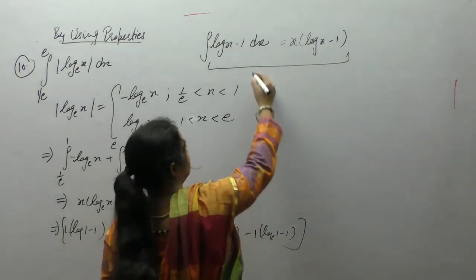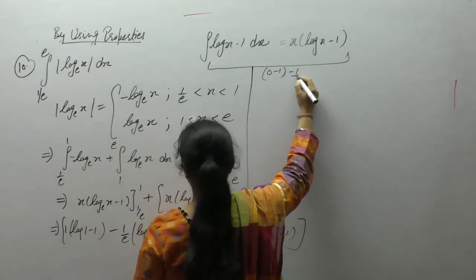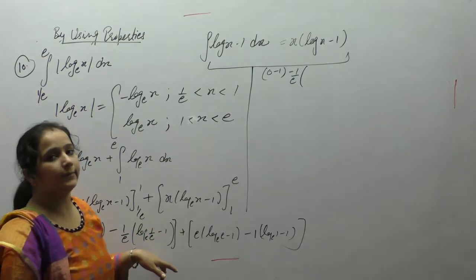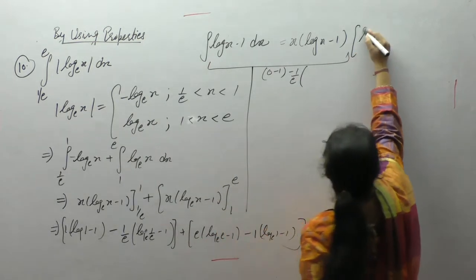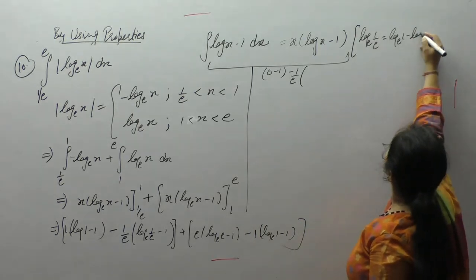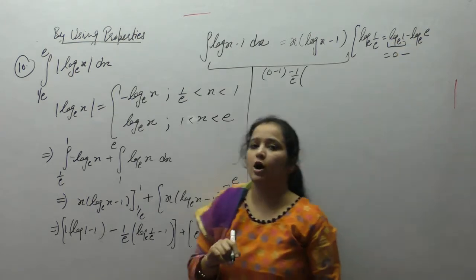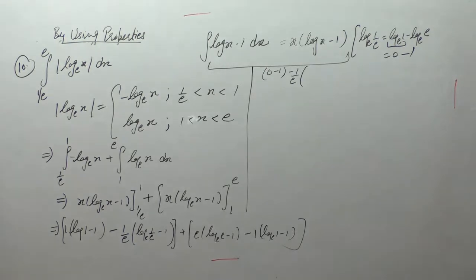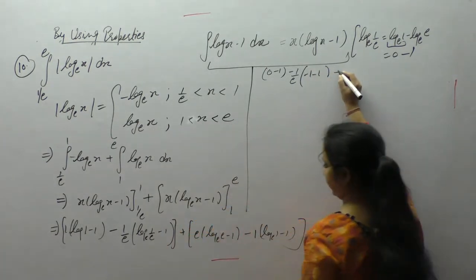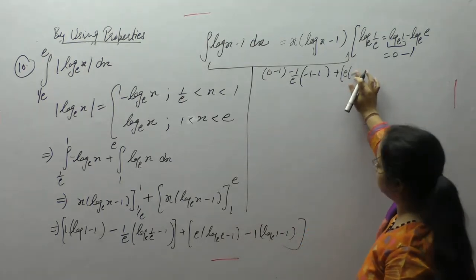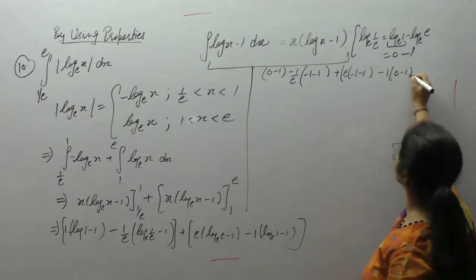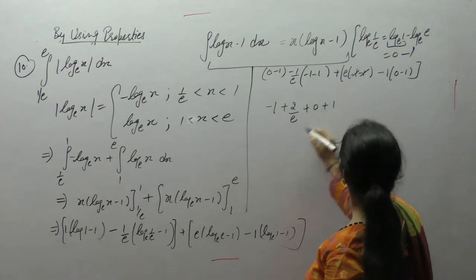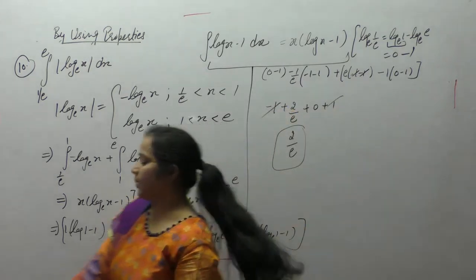Log 1 is 0. So we can write log(1/e) as log a/b equals log a minus log b. Log 1 is 0 and log e with base e is 1. So minus 1 minus 1 plus e plus e plus e minus 1 minus 1, log 1 is 0. That gives 2/e.